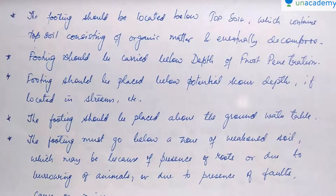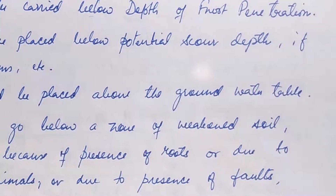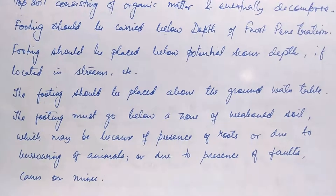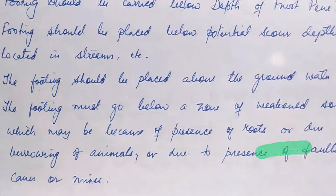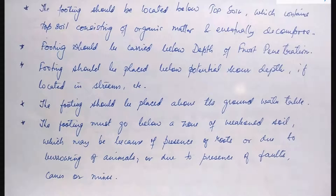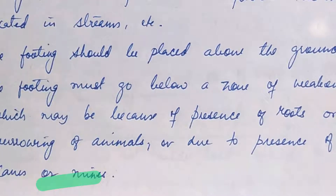The footing should be placed above the ground water table if possible, or as far above as possible. The footing must also go below a zone of weakened soil, which may be due to presence of roots, burrowing of animals, or due to the presence of faults, mines, or caves.